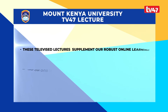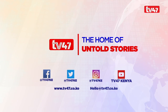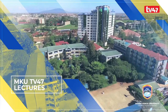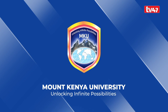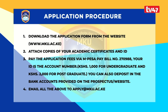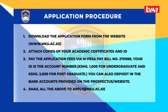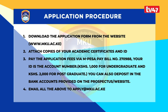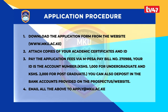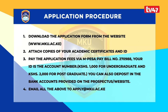Televised lectures supplement our robust online learning on the MKU online platform. You can view more televised lectures via our online platform. We are in a digital era, and Mount Kenya University knows this. To complete your online application: download the application form from www.mku.ac.ke, attach copies of your academic certificates and ID, pay the application fee via M-PESA paybill number 270-988 with your ID as the account number — 2,000 shillings for postgraduate. You can also deposit via bank accounts provided on the website. Then email all documents to apply@mku.ac.ke.